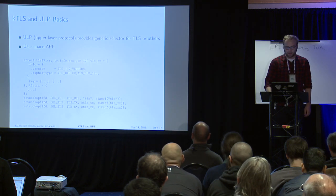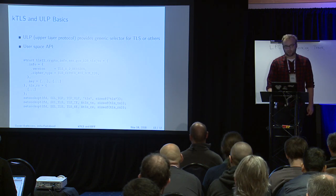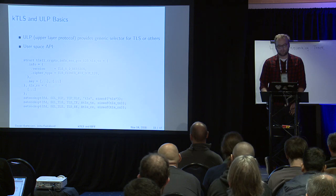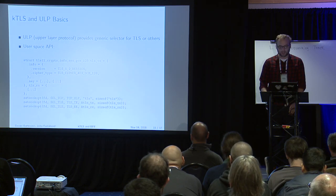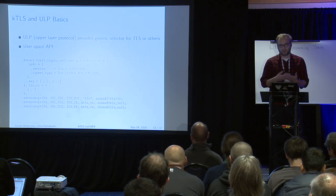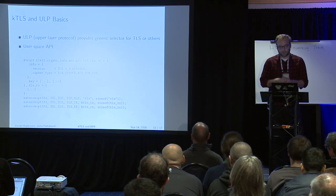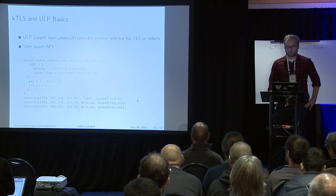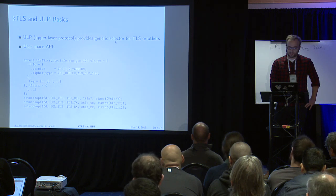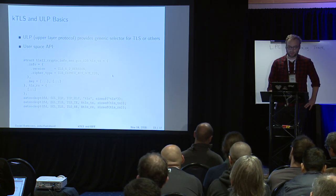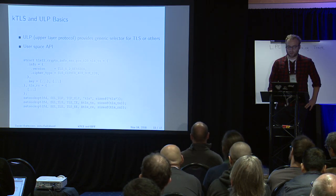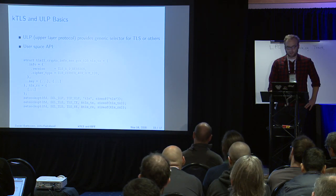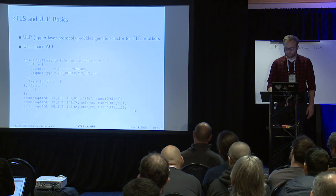KTLS operates basically transparent to the application in the sense that an SSL library such as OpenSSL will do all the setup in the background. The upper layer protocol, ULP, is how this is glued onto a socket — it's a very thin layer where a module registers to the ULP and replaces a couple of callbacks. To set up KTLS, you first register your socket for use with KTLS, then a control data structure is filled out by libraries such as OpenSSL once the handshake completes, specifying the TLS version, key size, the actual key, and various other information. Then you can enable it on transmission, receive, or both at the same time.